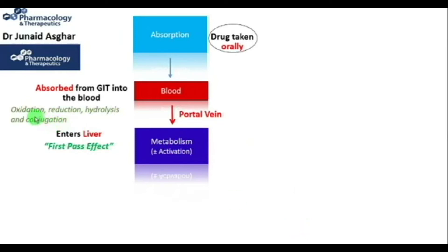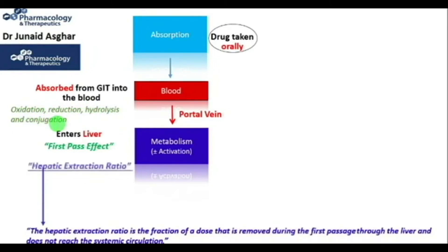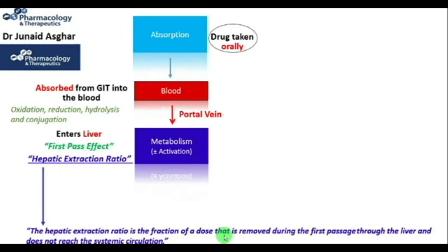There are four main metabolic processes that take place within the liver: oxidation, reduction, hydrolysis, and conjugation. The hepatic extraction ratio is the fraction of a dose that is removed during the first passage through the liver and does not reach the systemic circulation.